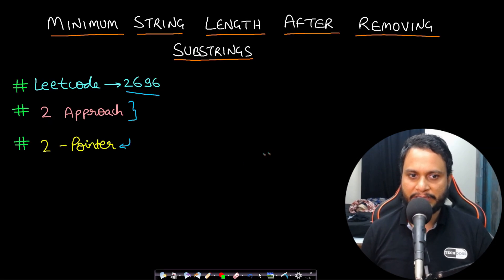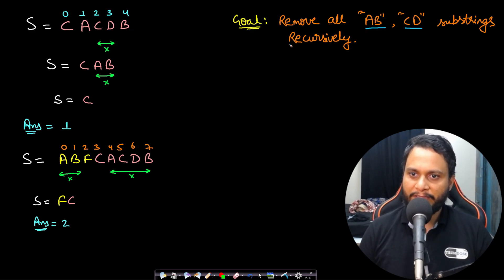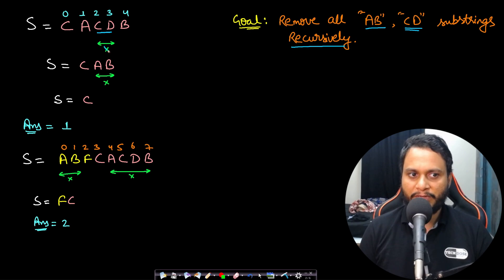Let's look at an example for better understanding. Let's say our string is CACDB. Our goal is to remove all occurrences of substring AB and substring CD, and this has to be done recursively. In our given string CACDB, you can see that CD is actually matching with the substring to be removed.